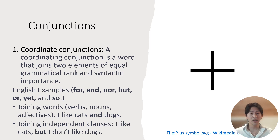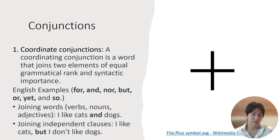To give some English examples, coordinate conjunctions include for, and, nor, but, or, yet, and so. When we use these English coordinating conjunctions, we are joining words that are similar — like verbs and verbs, or nouns and nouns, or adjectives and adjectives. For example, 'I like cats and dogs' — the conjunction 'and' is connecting two nouns that both have equal function.